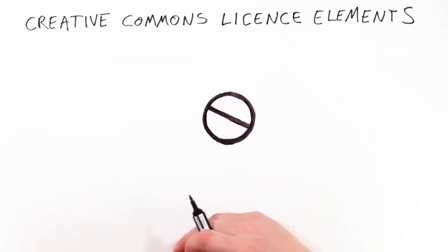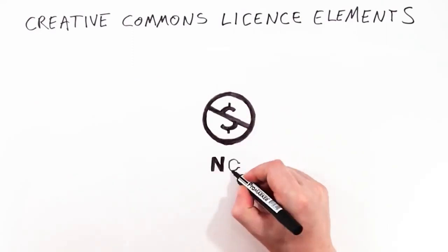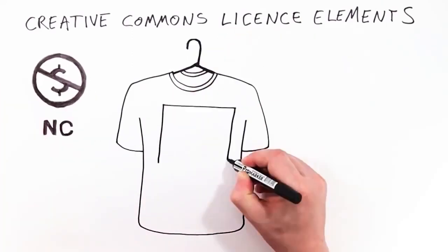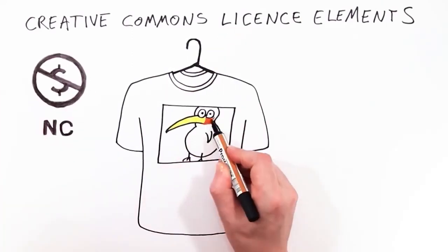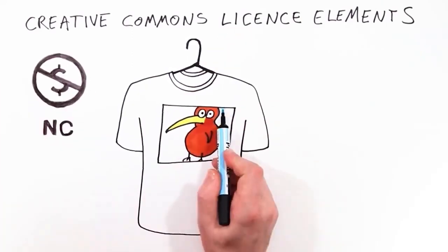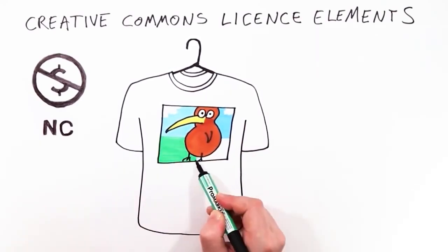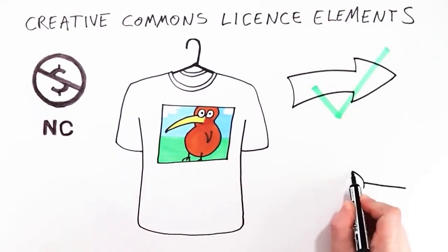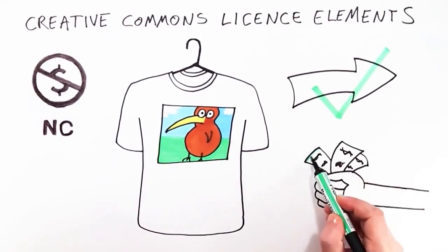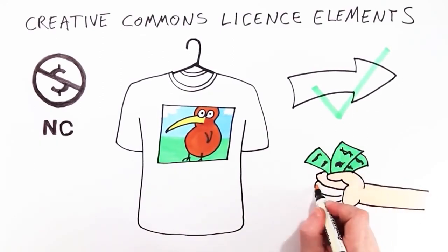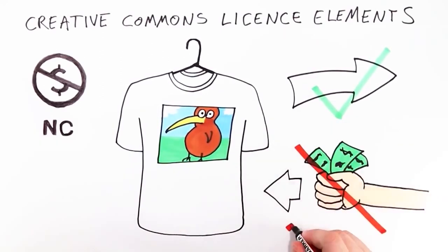This is non-commercial. It means no one else but Kiri is permitted to make money from CC Kiwi. Tim wants to print the photo onto t-shirts and distribute them to friends. He can do this, but he must not sell them.